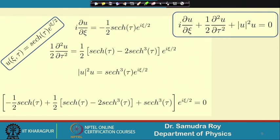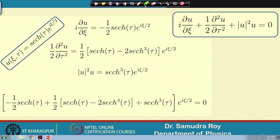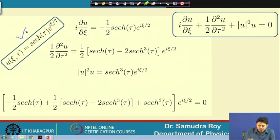Now we have the solution in hand. The next step is to put this solution into the equation and check whether it is valid. Here we have u = sech(τ) · e^(iξ/2). I need to put this into the governing equation and check. The first term i ∂u/∂ξ gives −½ sech(τ) e^(iξ/2), which is straightforward.